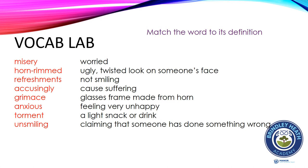How did you get on? Let's have a look. The first one that I thought would be quite easy would be to join 'unsmiling' with 'not smiling' — we've got the prefix 'un' which means not, essentially. Other simple ones: 'refreshments' — a light snack or drink. 'Horn-rimmed glasses' — well, there's the word horn, so we can assume that's glasses made from horn. Sometimes the frame can be made from horn, particularly with older glasses.